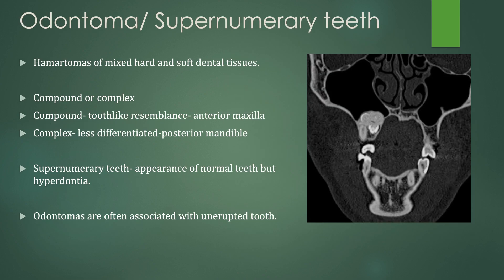Now for sclerotic lesions. First is an odontoma, or supernumerary teeth. These are hamartomas of mixed hard and soft dental tissues. You can have compound or complex odontomas. The compound ones have a tooth-like resemblance and tend to be in the anterior maxilla, whereas complex odontomas are less differentiated and in the posterior mandible, so they won't necessarily look like teeth, although they might have tooth elements within them. Here is that sclerotic appearance with tooth pieces within a sclerotic lesion in the maxilla. They are also associated with unerupted teeth. Supernumerary teeth have the appearance of normal teeth, but hyperdontous — a tooth that is more than you are supposed to have.